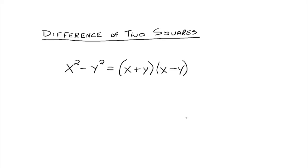I'm going to have you think of it a different way. Think of this as something squared minus something else squared — instead of just x and y, because we're going to have all kinds of things. So we want to think of it as something squared minus something squared — that's where the 'difference' comes in, of two squares. Something squared minus something else squared always factors into something plus something else, times something minus the something else. Let's look at some examples.